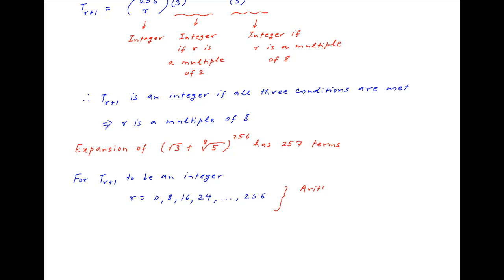This is an arithmetic progression with first term 0 and common difference 8. Let 256 be the nth term of this AP. Therefore, 256 = 0 + (n-1)×8, which simplifies to 8n - 8 = 256, so 8n = 264, giving n = 33.